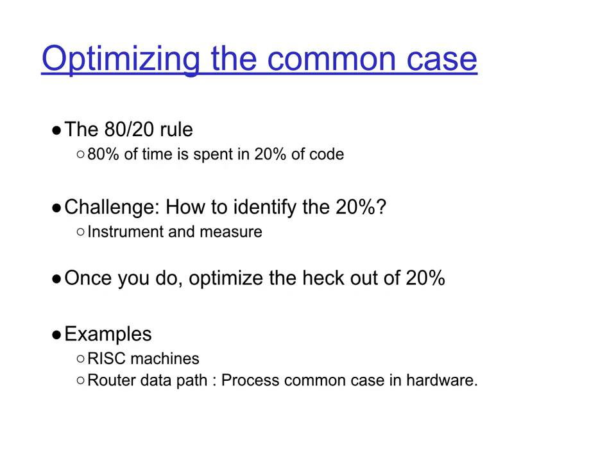You don't have to optimize the other 80% of the code, because those features are used so infrequently that nobody will complain. Examples include RISC machines, which identify basic instructions that must be supported and spend all chip real estate optimizing those instructions, rather than worrying about complex instructions that can be constructed from simpler ones. Similarly, router data paths optimize the common case in the forwarding path for route lookup.